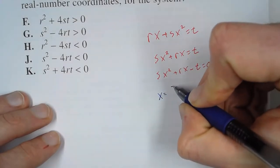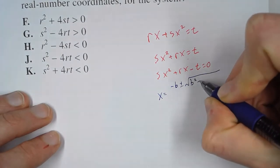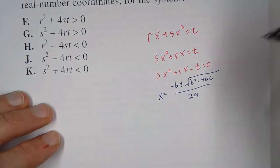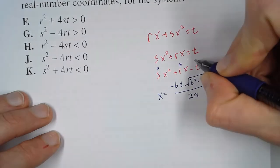So what is that? Negative b plus or minus the square root of b squared minus 4ac all over 2a. Now, this is a, this is b, and that's c.